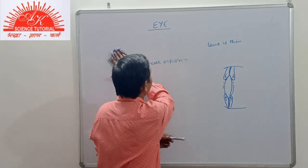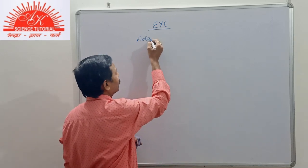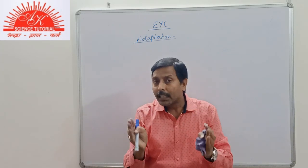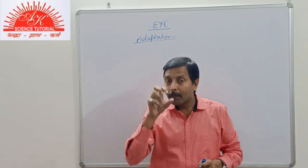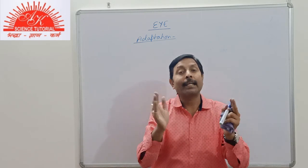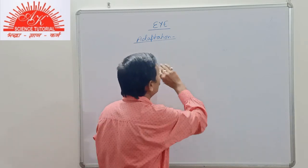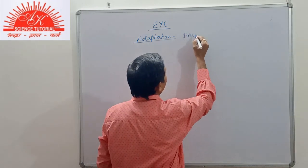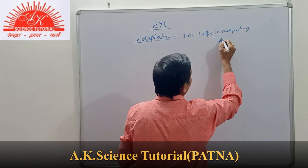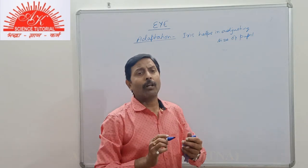The next point related to the controlling function of the eye is adaptation. Adaptation is the process of adjusting the size of the pupil to control the amount of light entering into the eyes, depending upon the availability or intensity of light. The iris helps in adjusting the size of the pupil. It is of two types.